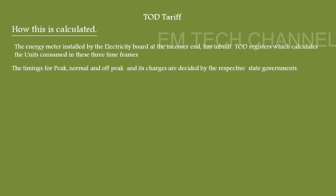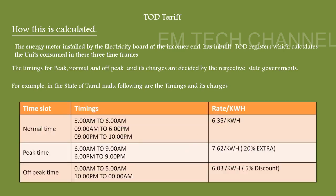In our example we took Tamil Nadu tariff as a reference. You can see the Tamil Nadu tariff rate where timings are divided into normal time, peak time, and off-peak time. Normal time is from morning 5 to 6 AM, 9 AM to 6 PM, and 9 PM to 10 PM, and energy consumed in this period is charged at 6.35 rupees per kilowatt hour. Peak time is from morning 6 AM to 9 AM and evening 6 PM to 9 PM, charged at 7.62 rupees per kilowatt hour — that is 25 percent extra over normal charges.